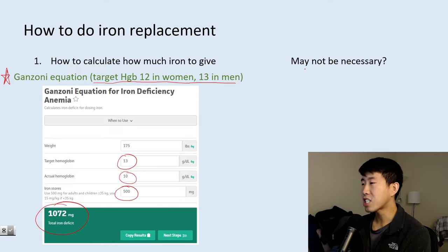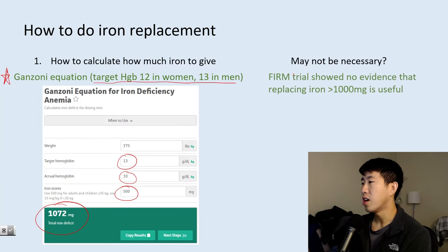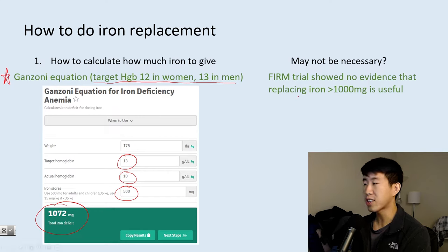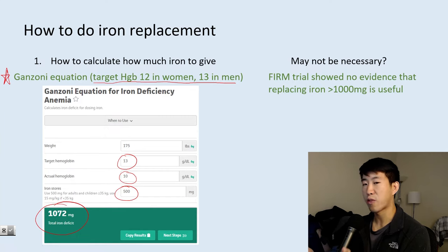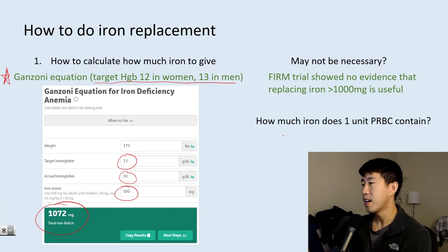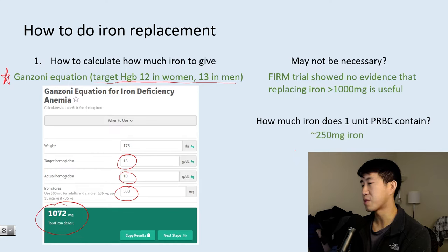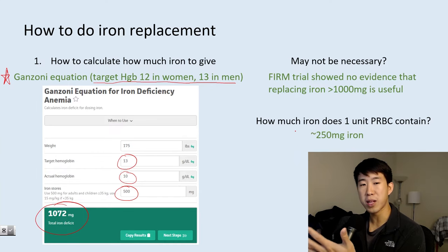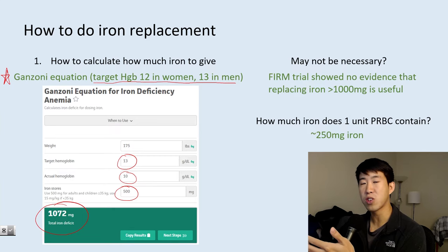That calculation may not always be necessary. The FIRM trial showed no evidence that replacing more than 1,000 milligrams of iron was clinically useful — patients receiving 1,000 mg IV versus 1,500 mg IV showed no significant difference. Also worth noting: one unit of packed red blood cells contains about 250 milligrams of iron, so prior transfusions factor into how much additional iron you need to give.